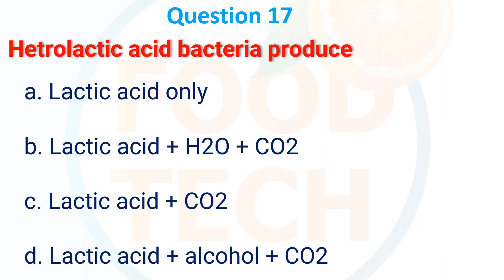Heterolactic acid bacteria produce: A. Lactic acid only, B. Lactic acid plus H2O plus CO2, C. Lactic acid plus CO2, D. Lactic acid plus alcohol plus CO2. The answer is D: Lactic acid plus alcohol plus CO2.